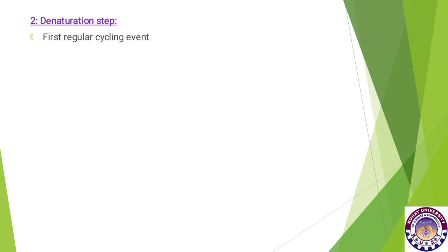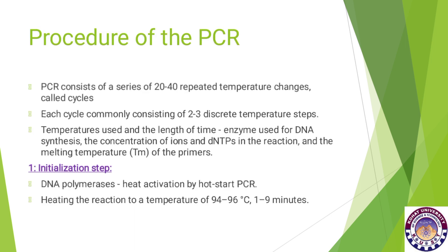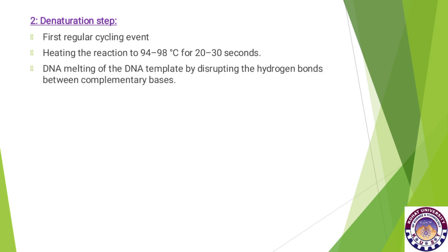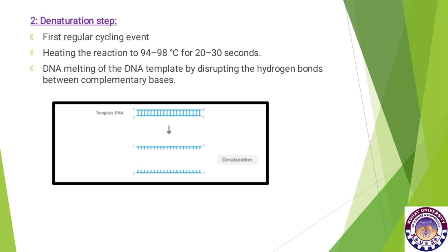The denaturation step is the first regular cycling event. It involves heating the reaction to 94 to 98 degrees centigrade for about 20 to 30 seconds — shorter than the initialization step. This causes melting of the DNA template by disrupting the hydrogen bonds between complementary bases, separating the double-stranded DNA into single strands.